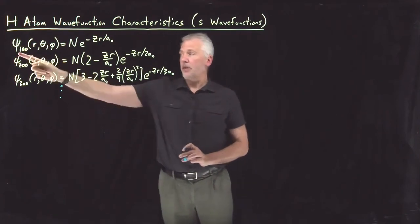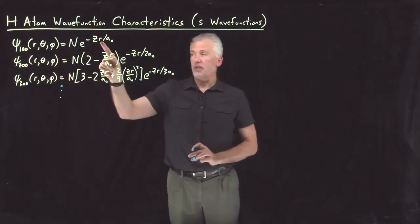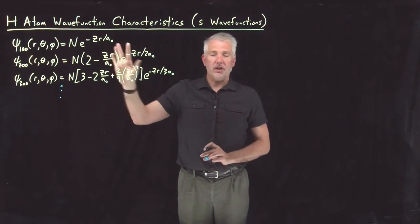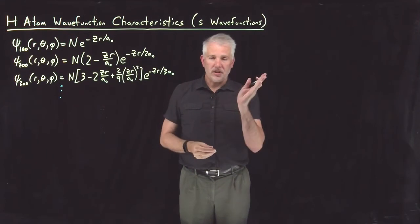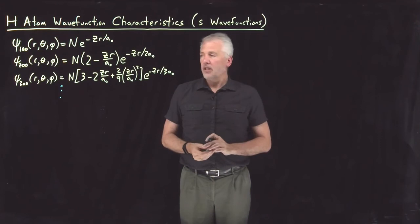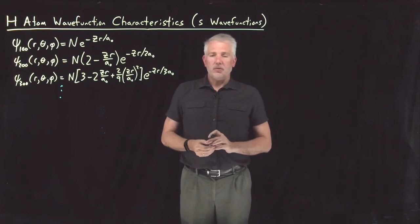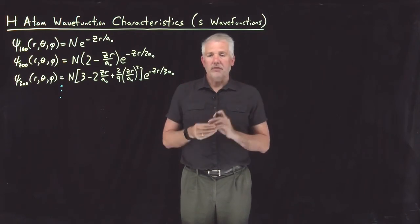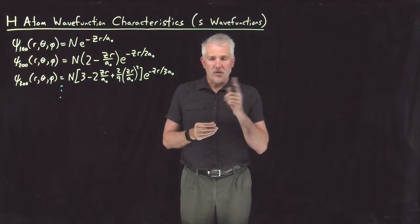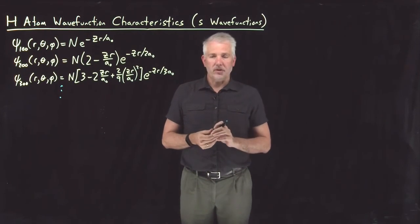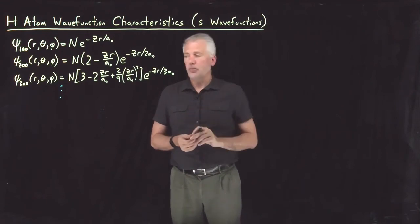The size of the wave function depends on how far the electron is away from the nucleus, but it doesn't depend on what direction the electron is relative to the nucleus. So no matter what direction you look outwards from the nucleus, you have the same probability of finding the electron in any direction. That gives these wave functions spherical symmetry, and for that reason we call them s wave functions.